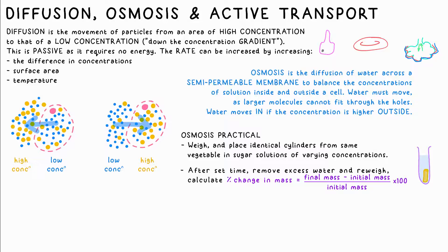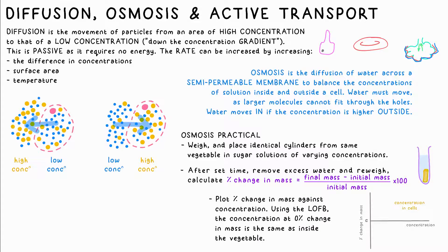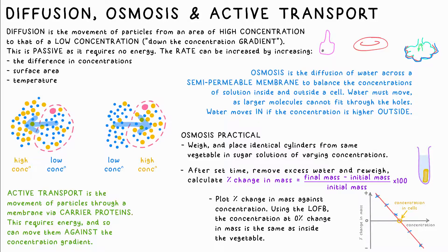Calculate percentage change in mass by doing: (final mass − initial mass) ÷ initial mass × 100. If it's lighter than before, this will be a negative change in mass. Plot these percentages against sugar concentration and draw a line of best fit — where this crosses the x-axis is the concentration that results in no change in mass, meaning no osmosis.